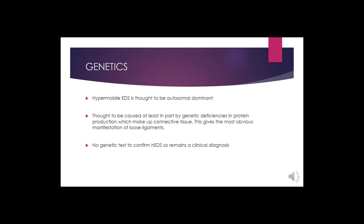Genetically, hypermobile EDS is thought to be autosomal dominant. It's believed to be caused at least in part by genetic deficiencies in connective tissue protein production, which produces the most obvious manifestation — loose ligaments and hypermobile joints. There is no genetic test to confirm hypermobile EDS, so this remains a clinical diagnosis.